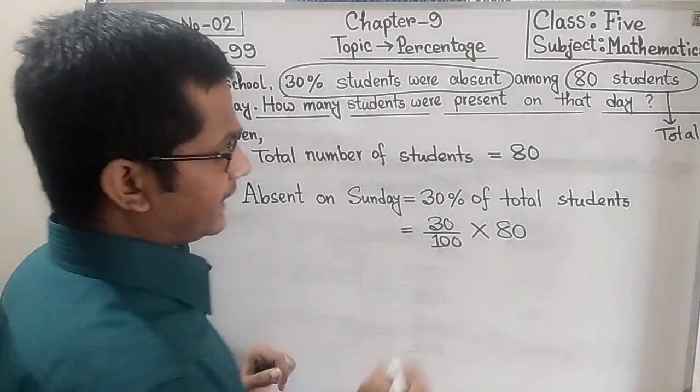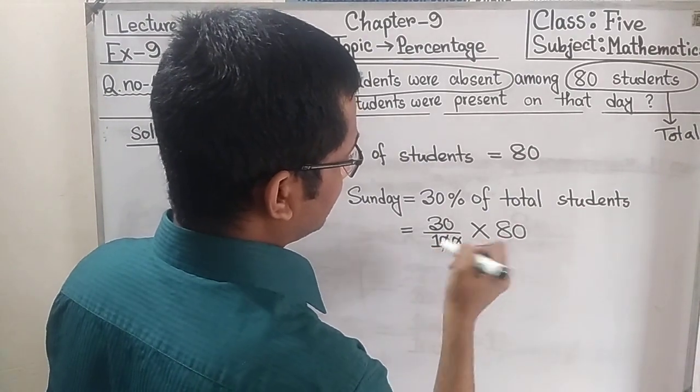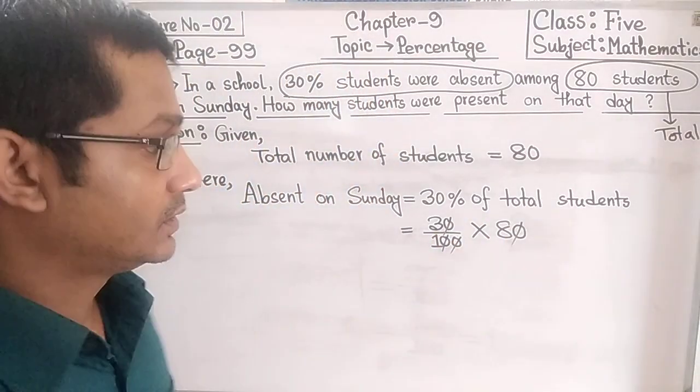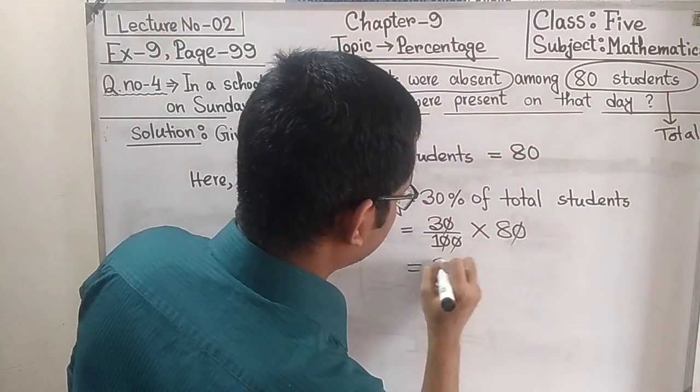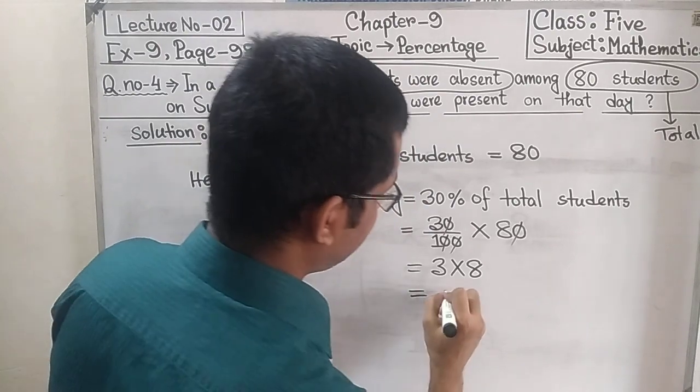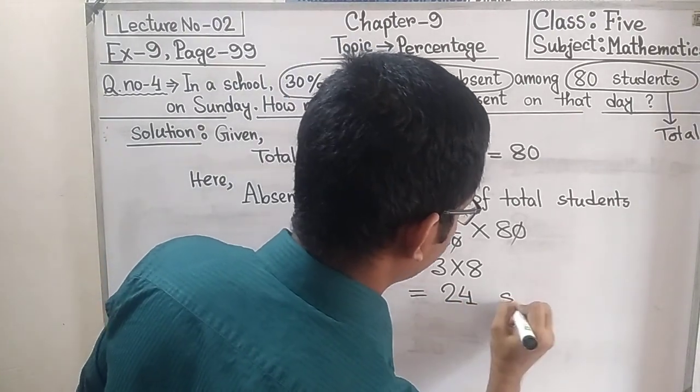Now we can cancel these two zeros from denominator and numerator. So remains 3 into 8. That means 3 eights are 24 students.